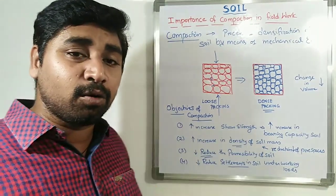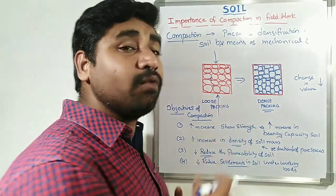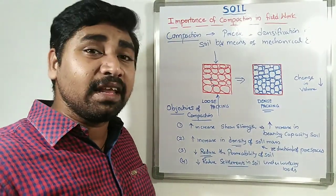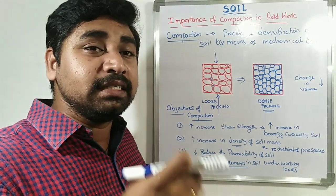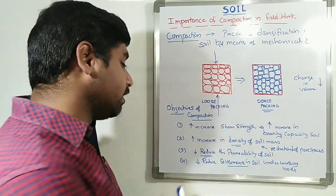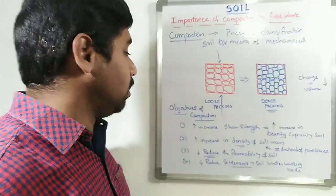On attaining a densely packed arrangement or closely packed arrangement, the susceptibility for change in volume is very, very less. So we can expect very, very less amount of changes in volume of the soil. That is why amount of settlement taking place also will be reduced because of this compaction process.